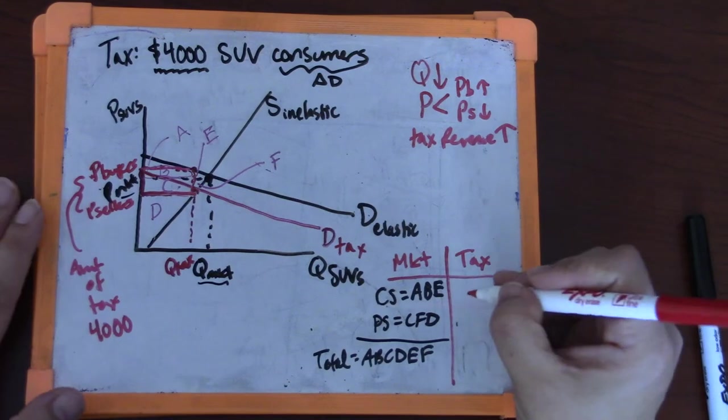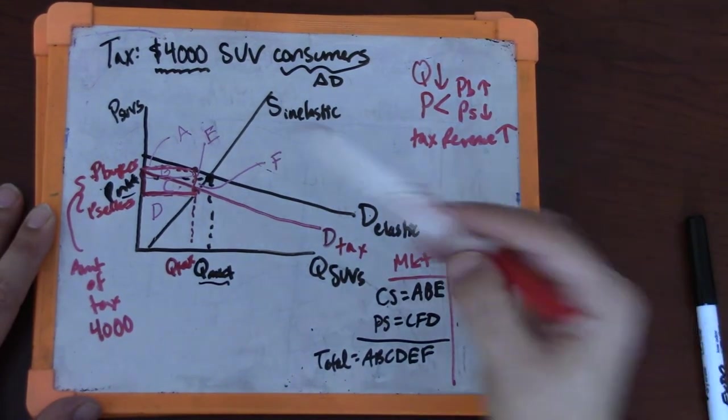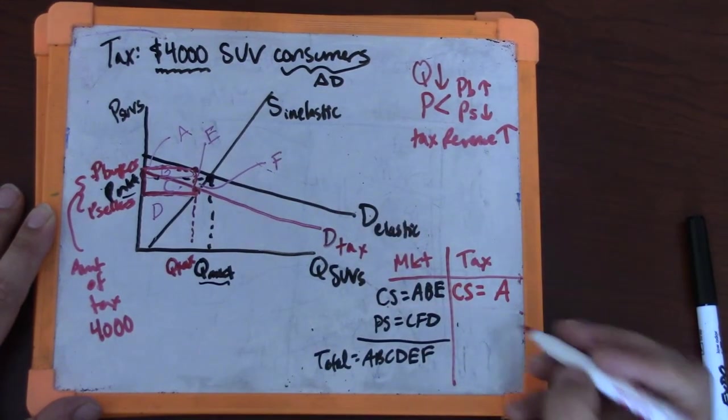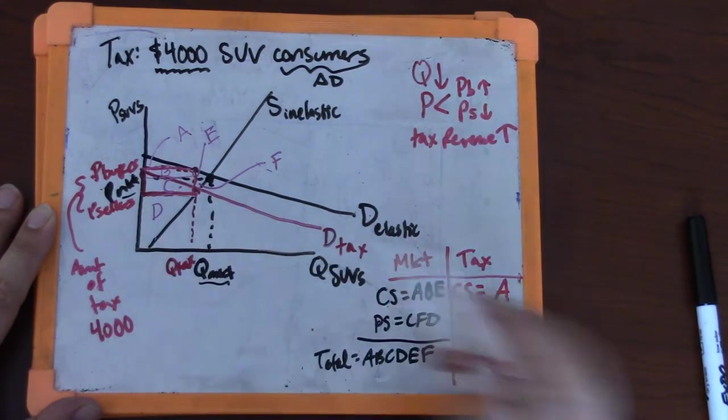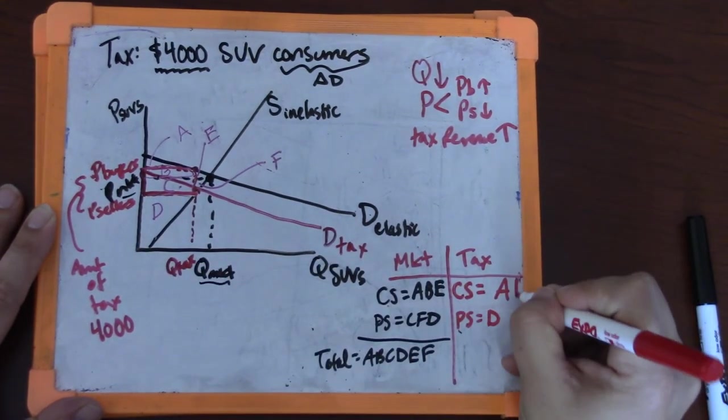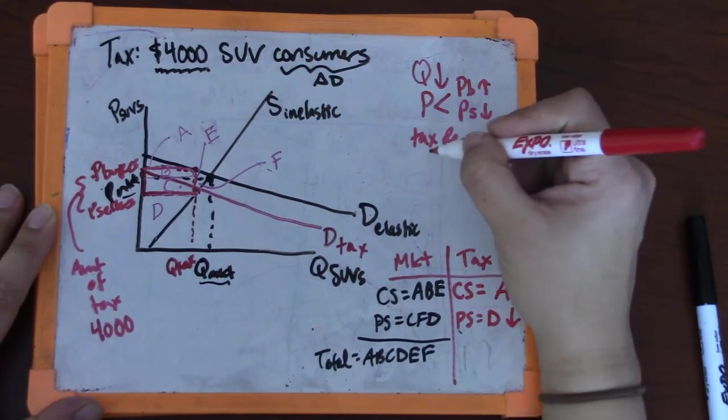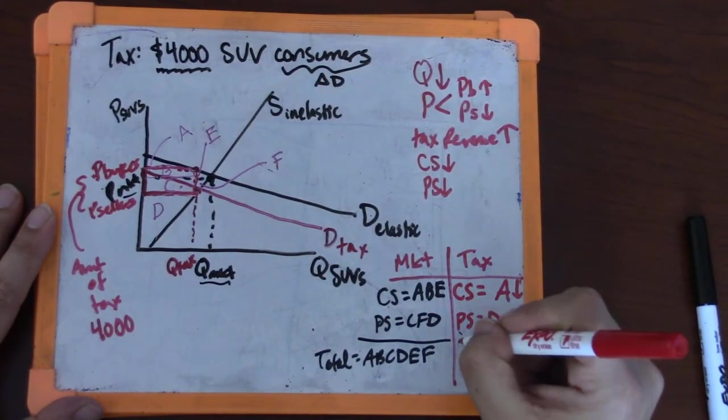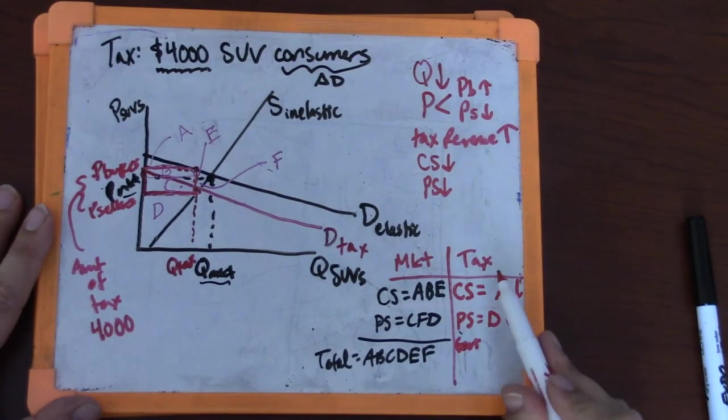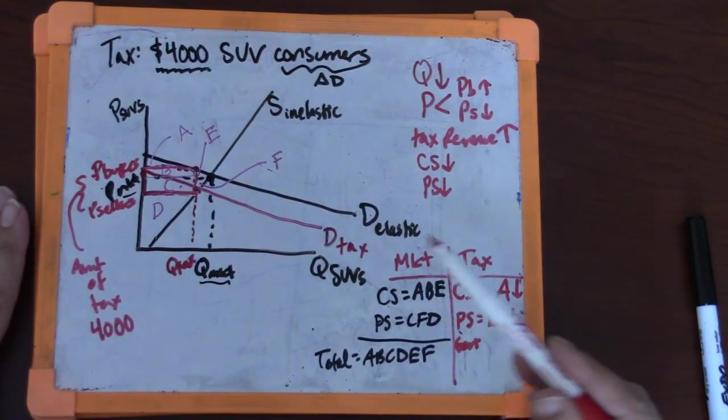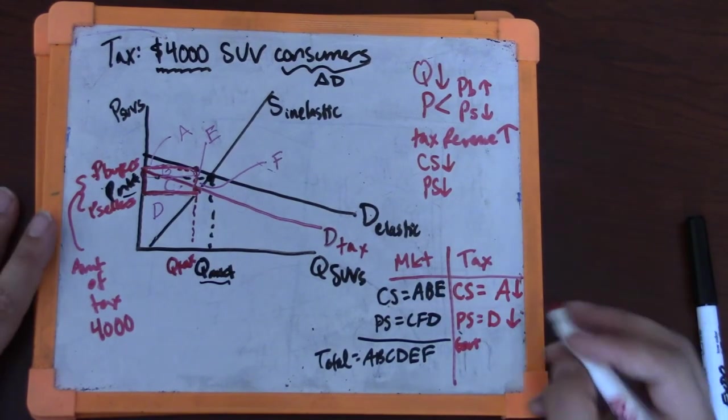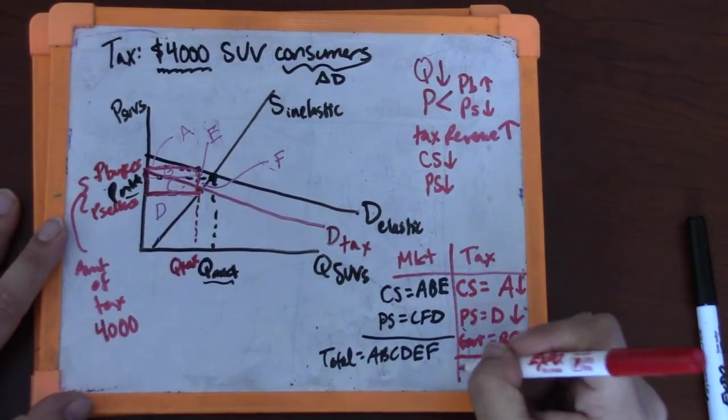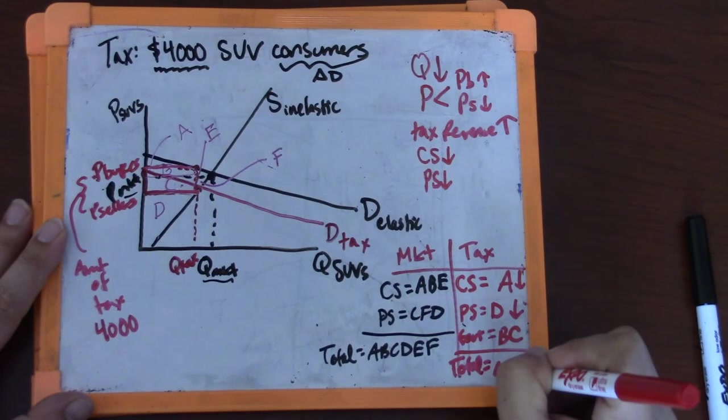After the tax, consumers' price went up. The price for buyers is higher, which is the price that affects consumers. They are only making A. Producers' price went down; price for sellers is lower, so they only receive D. Consumers are worse off and producers are worse off as a result of the tax. In our list of consequences, there is one player that is in the market now that there's a tax and who was not getting any well-being at the market equilibrium: the government makes B and C.